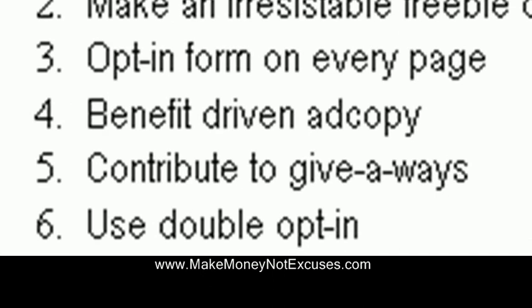Tip number six: use double opt-in. This is very important because people will cry spam even though it's unwarranted. If they've opted in, they have no reason to cry spam unless you're not giving them what you said you would give them. So if you're telling them you're going to talk about one subject and then you're giving them offers on a bunch of different topics, that too is spam. A lot of times people will cry spam even though you're legitimately marketing to them, so to protect yourself, you need to have double opt-in — that way you can show verification that you did in fact have permission to email them.